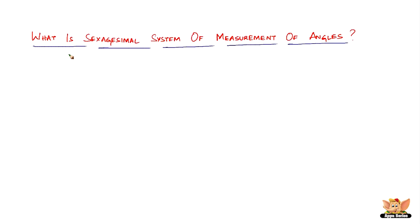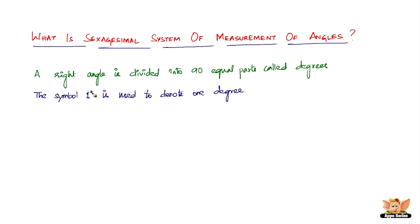In the sexagesimal system, a right angle (that is a 90-degree angle) is divided into 90 equal parts called degrees. The symbol 1° is used to denote one degree.